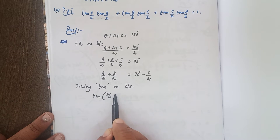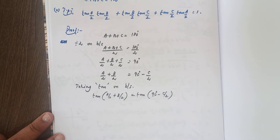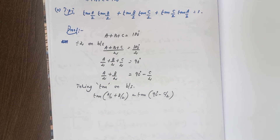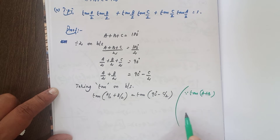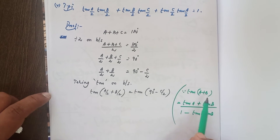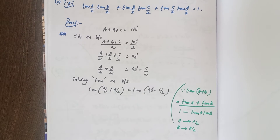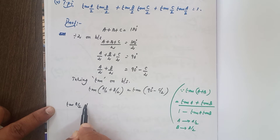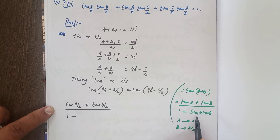tan(A/2 + B/2). Here we apply the formula tan(A+B) = (tan A + tan B) / (1 − tan A · tan B). Instead of A we have A/2 and instead of B we have B/2. So A is replaced by A/2 and B is replaced by B/2. This gives (tan(A/2) + tan(B/2)) / (1 − tan(B/2)).